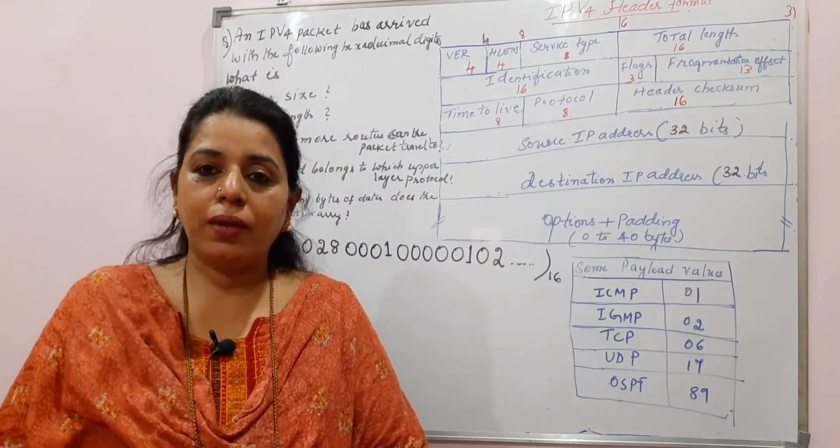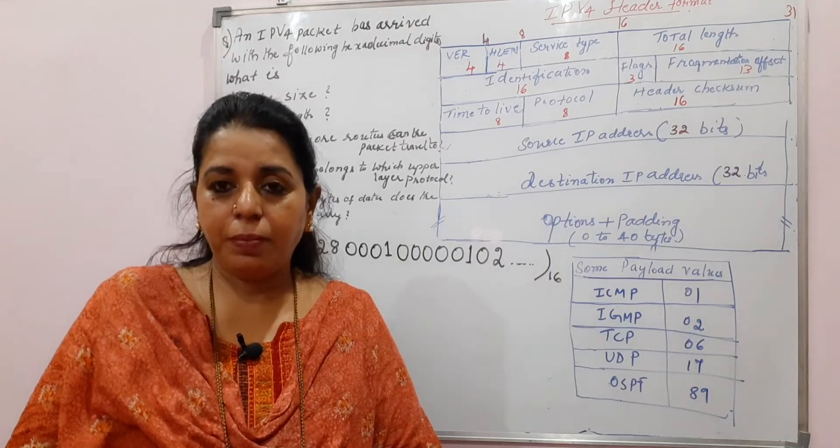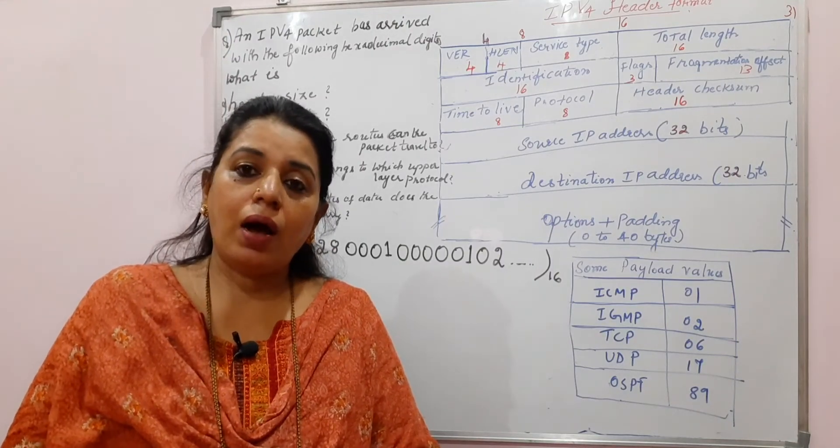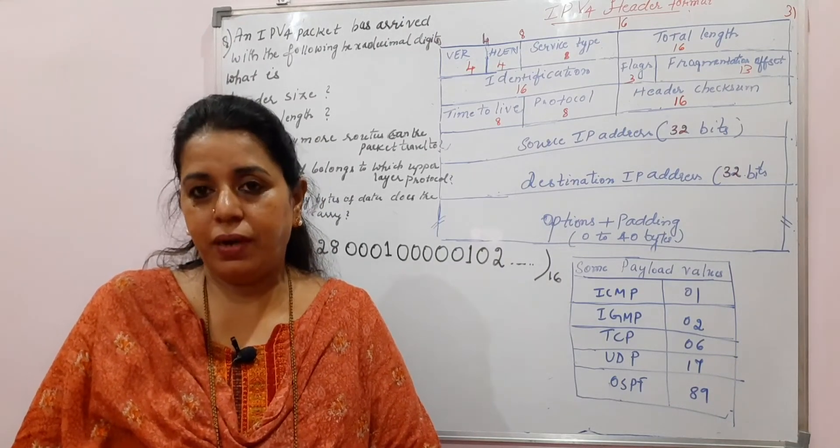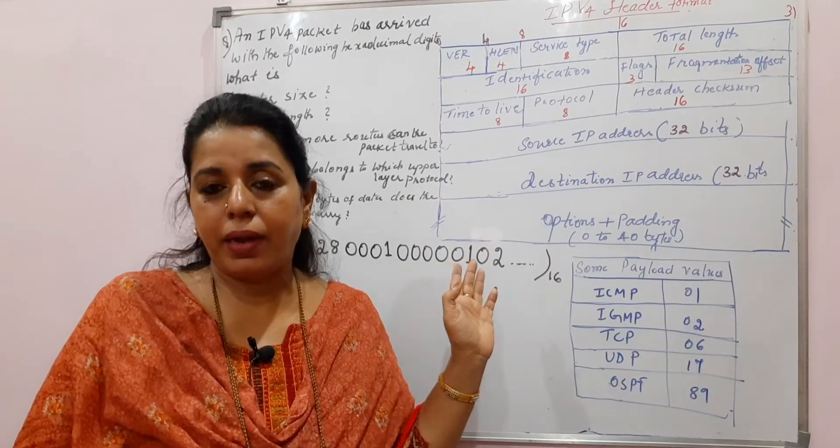But for this to solve, you should be knowing completely about the different fields that are there in the IPv4 header format, as well how many bits are meant for each of this field. If you remember this perfectly, then you will be able to solve a numerical like this.